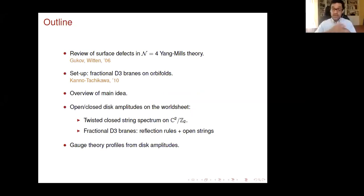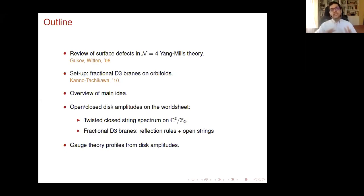Let me start with a brief outline. I'll start with a review of what Gukov-Witten defects are in N=4 super Yang-Mills theory, and then I'll introduce the setup, which is to consider fractional D3-branes on a C2 mod Z_M orbifold — the setup introduced by Kano-Tachikawa in 2010. The first half of the talk gives an overview using pictures and words, and the second half focuses on how we implement these ideas using superstring perturbation theory, computing disc amplitudes on the worldsheet in this orbifold background in the presence of D-branes.